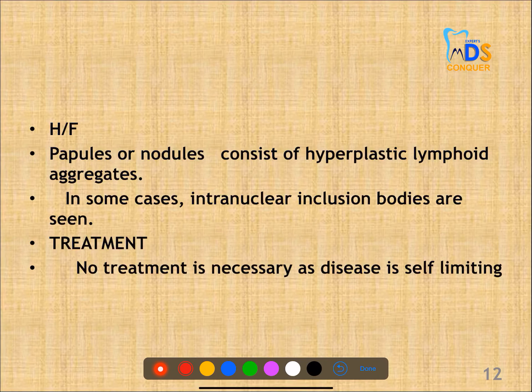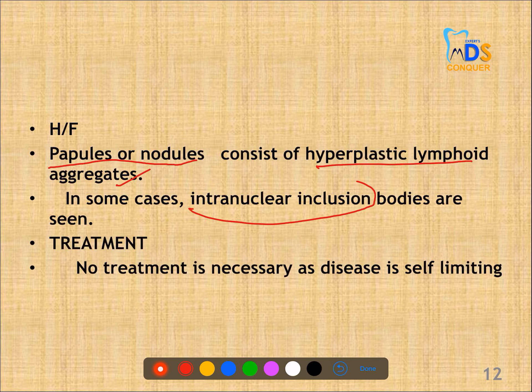In histopathological features, you can see papules or nodules which consist of hyperplastic lymphoid aggregates and intranuclear inclusion bodies. Lesions are not vesicular and do not ulcerate. Treatment is not required here because this disease is mostly self-limiting.